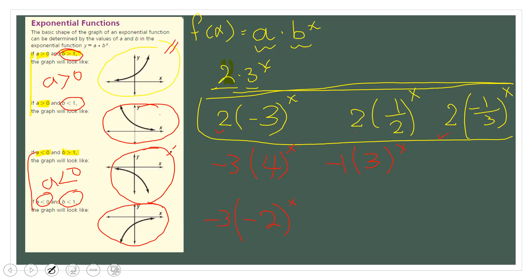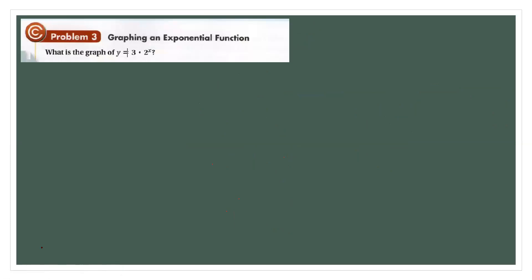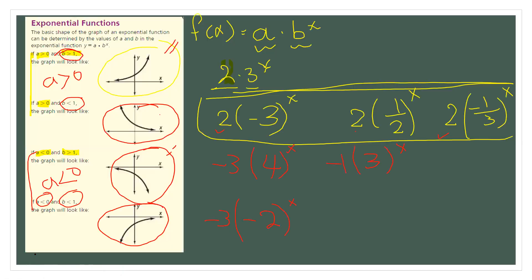Now let's do Problem 3: graphing an exponential function. What is the graph of y equals 3 times 2 raised to the power x? Here a is 3, which is greater than zero, and B is 2, which is greater than one, so the basic shape will curve upward.